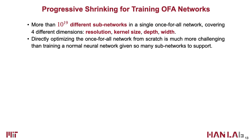To enable this high flexibility, we cover four different dimensions of neural architectures, including resolution, kernel size, depth, and width. In total, a single Once-for-All network encompasses more than 10 to the power of 19 different subnetworks.